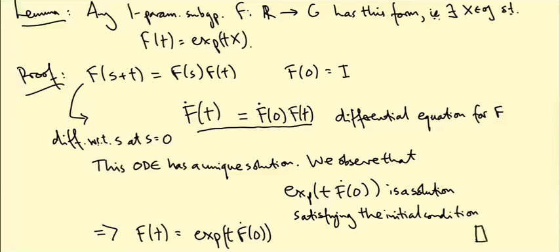So we're using this non-trivial result from differential equations that an ordinary differential equation has a unique solution. In fact, if you hadn't already constructed the exponential map, this strategy would construct it for you because it would be the unique solution of this differential equation. And actually, that is how you construct the exponential map for Lie groups in general, if you don't have matrices to work with.